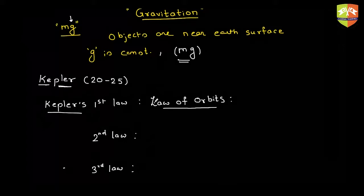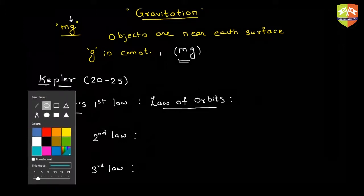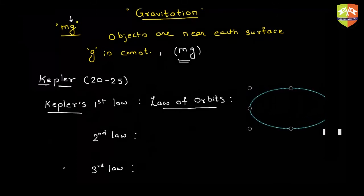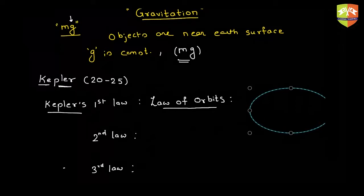When Kepler was doing all these studies, Newton was not there — the universal law of gravitation did not exist. All of Kepler's observations were purely empirical; he did not derive any law as such. Based on his observations, Kepler said that all the planets revolve around in an elliptical orbit.